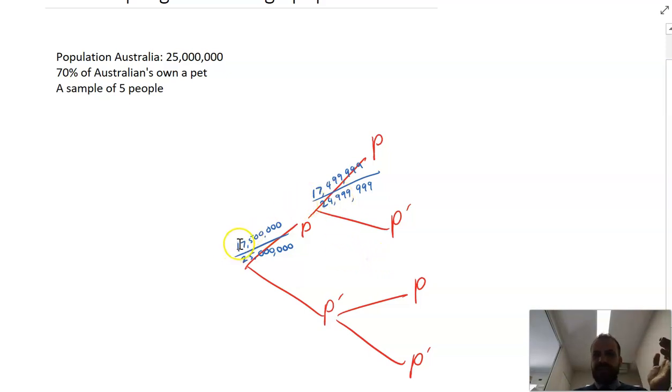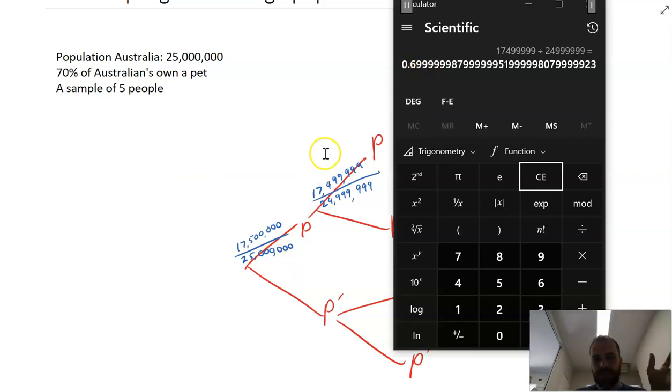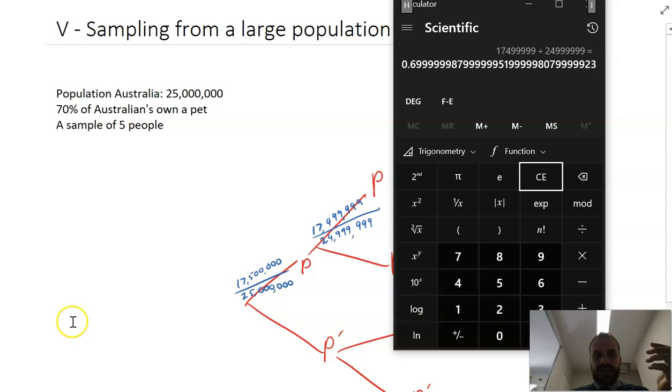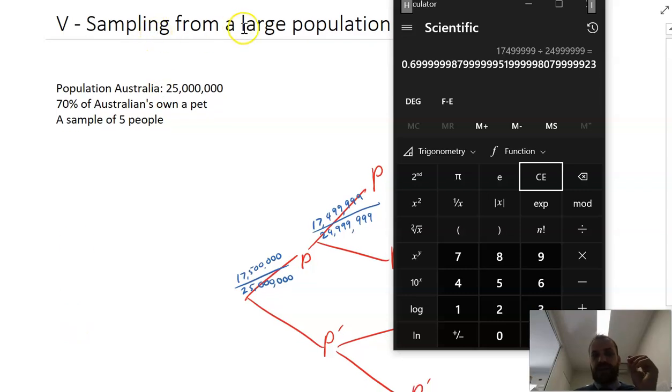But 17.5 million over 25 million as a decimal is 0.7. What about this next fraction here? My calculator tells me that that fraction is 0.6999999987. That is really, really close to 0.7, so close that we may as well pretend that it is. And that's what it comes down to when it comes to sampling from a large population.